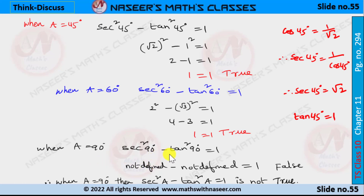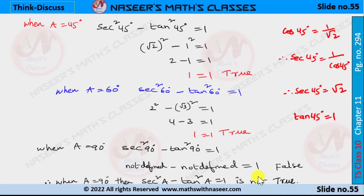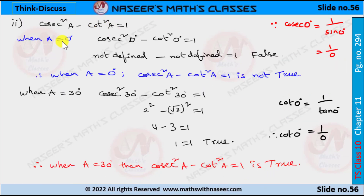When a = 90°, the identity sec²90° − tan²90° = 1. We know that sec90° is not defined and tan90° is also not defined. So not defined minus not defined equals 1 is false. Therefore, when a = 90°, sec²a − tan²a is not true.